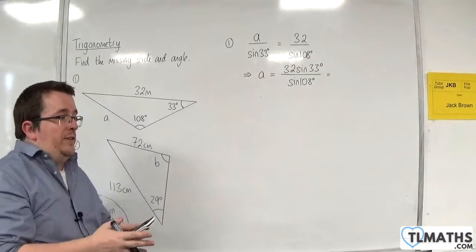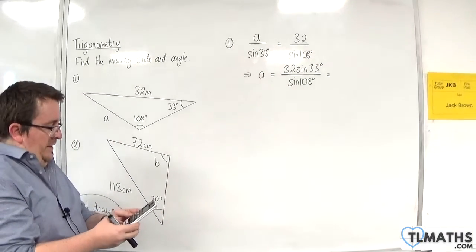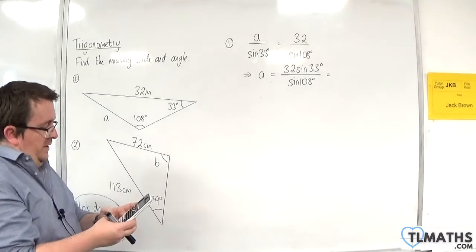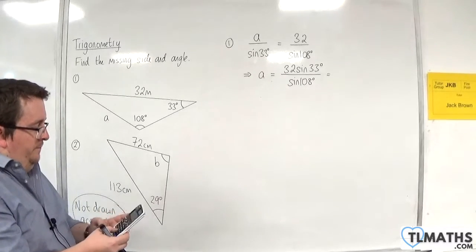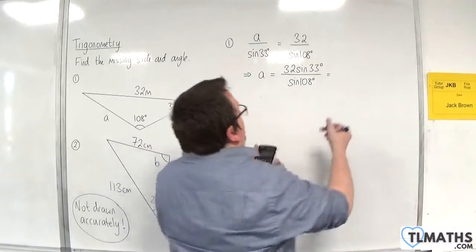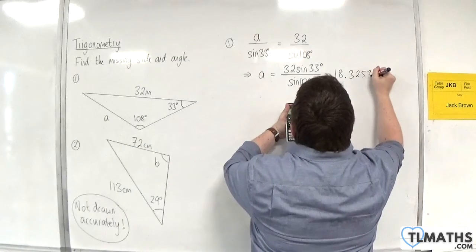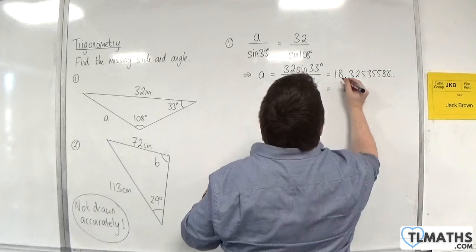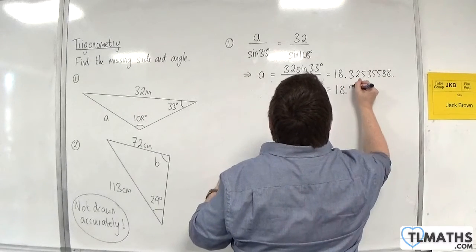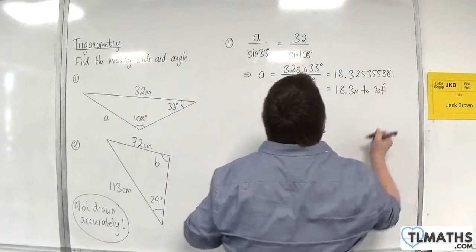Make sure your calculator is in degrees mode. There should be a D on the top row. We have 32 times sine of 33 divided by sine of 108, and we should get 18.32535588. So that would be 18.3 meters to 3 significant figures.